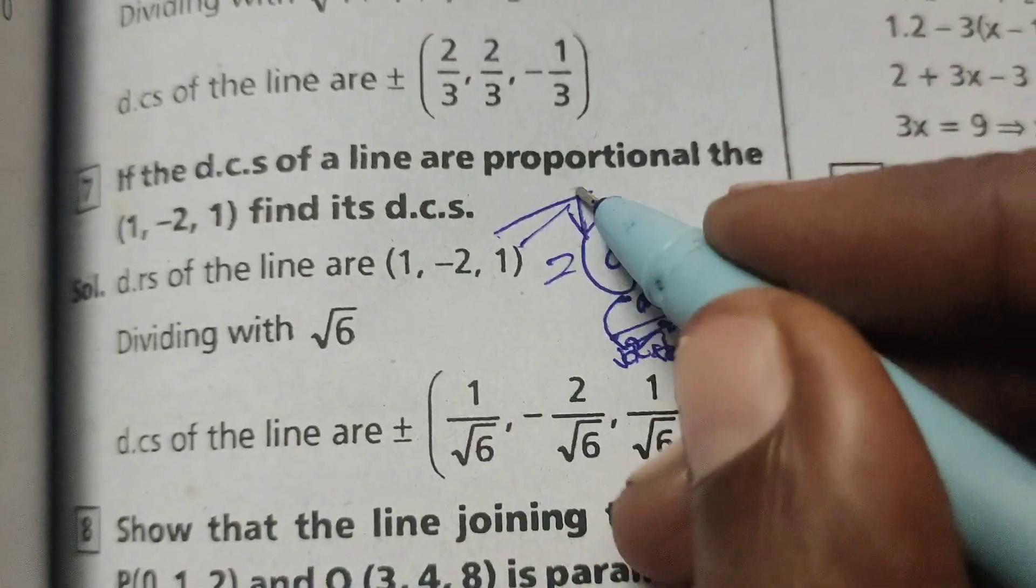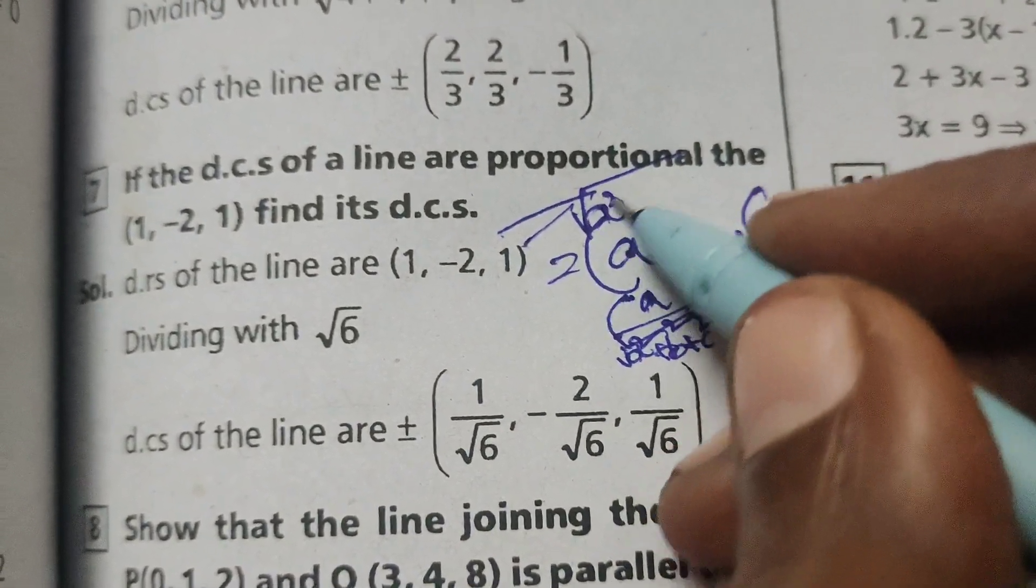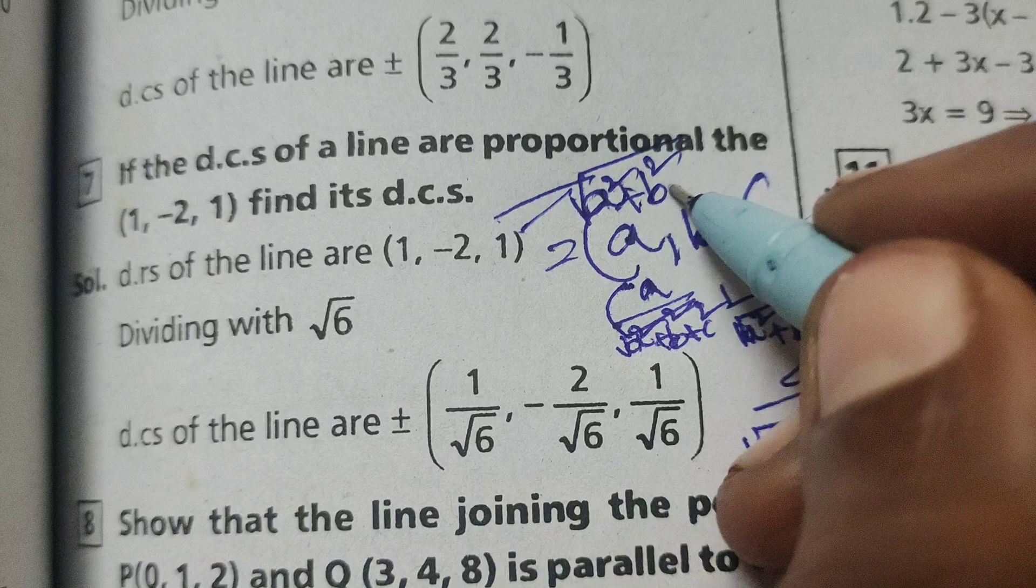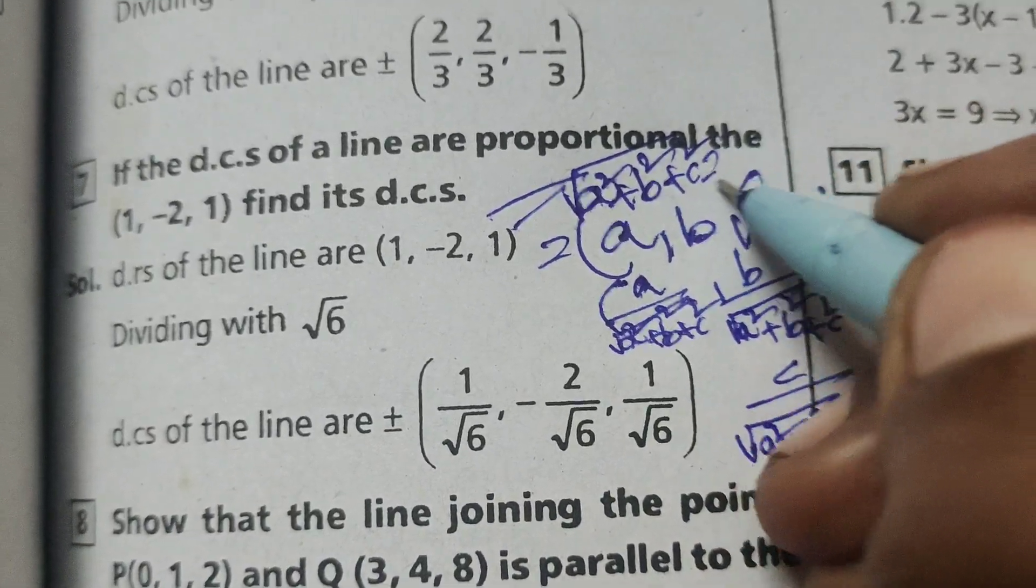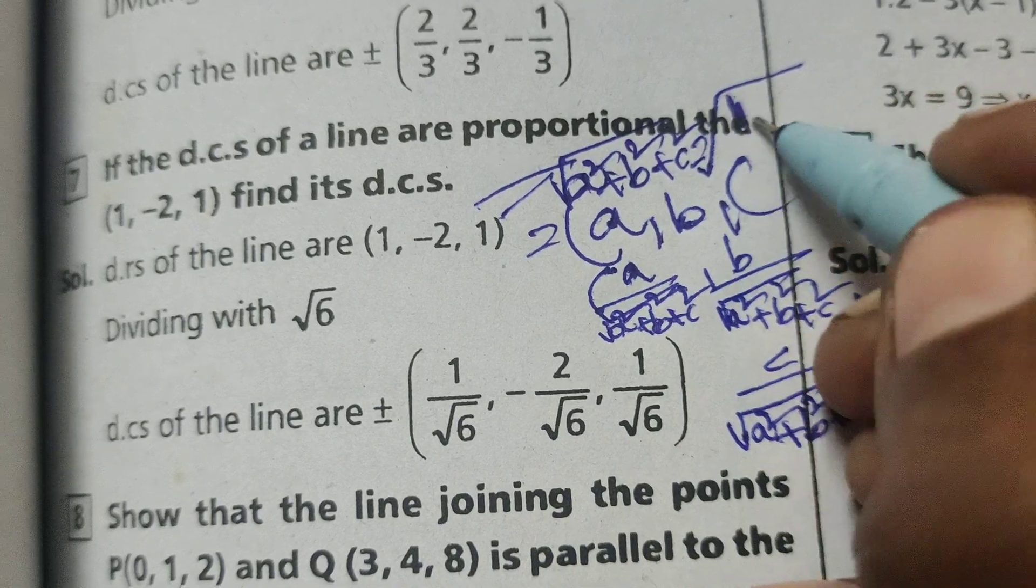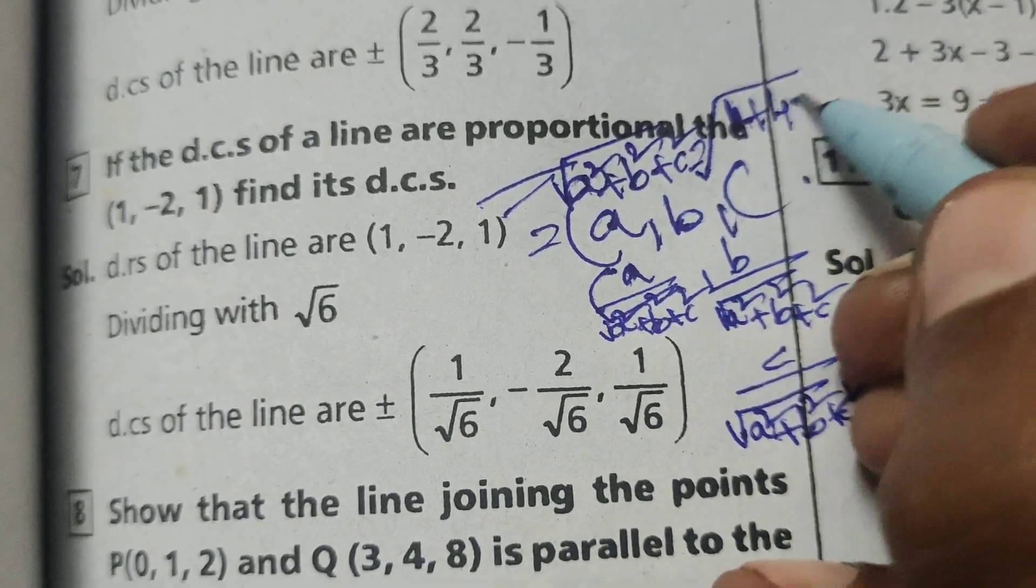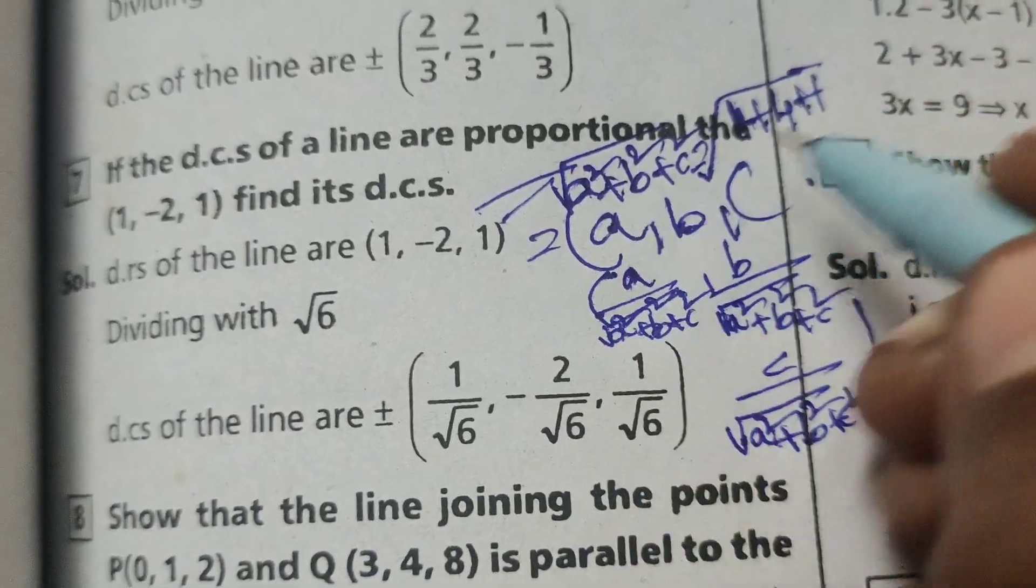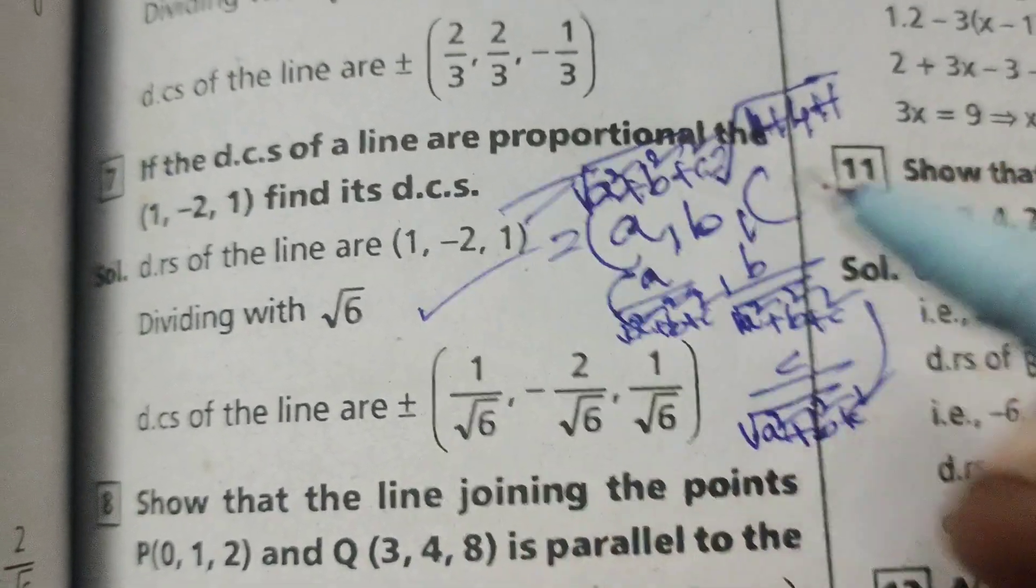So here, find out root of a squared plus b squared plus c squared. That is root of 1 squared which is 1, minus 2 whole squared is 4, plus 1 squared is 1. That is root 6.